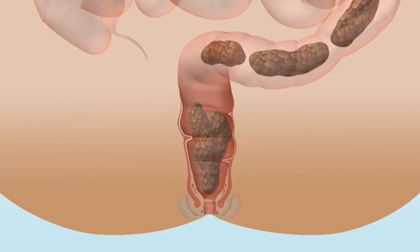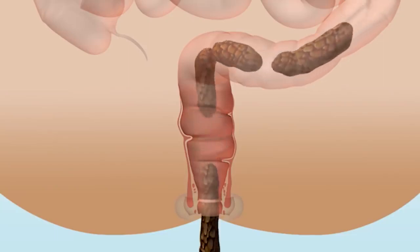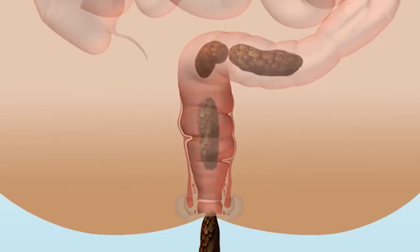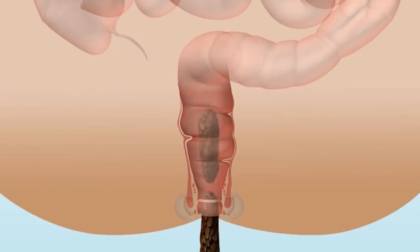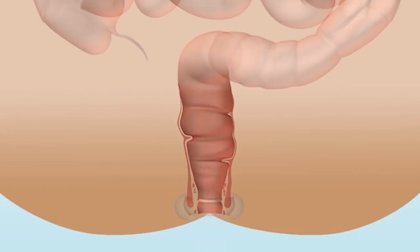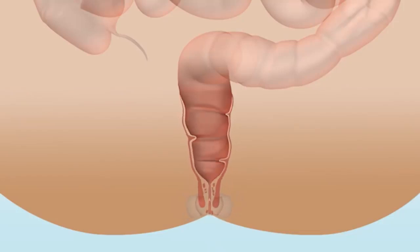When you are ready, you consciously allow the external sphincter to relax and stool is expelled. In between going to the toilet, both the internal and the external anal sphincter are contracted to keep you continent and to prevent leakage.